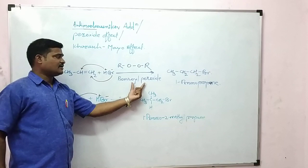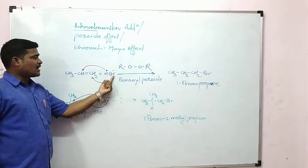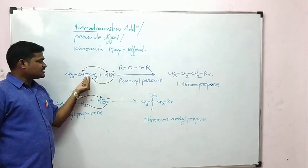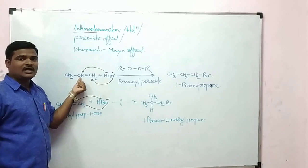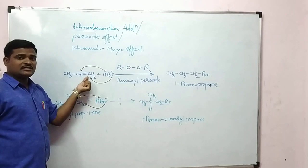The negative part, bromine, adds to that carbon where the hydrogen atoms are more. Across this double bond, there are two carbon atoms. This CH2 has two hydrogen atoms and CH has one hydrogen atom. So the negative reagent bromine adds to the CH2, and we get 1-bromopropane.